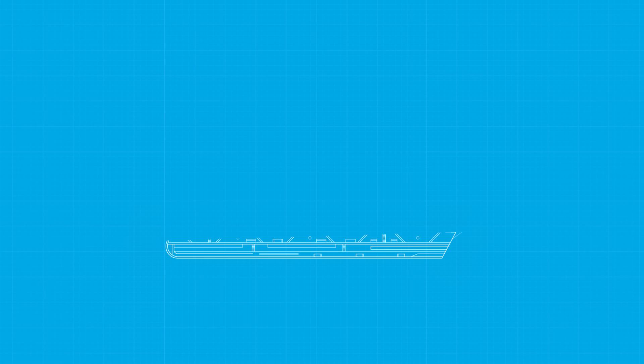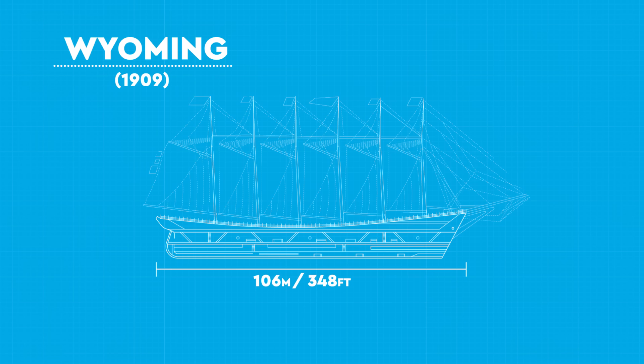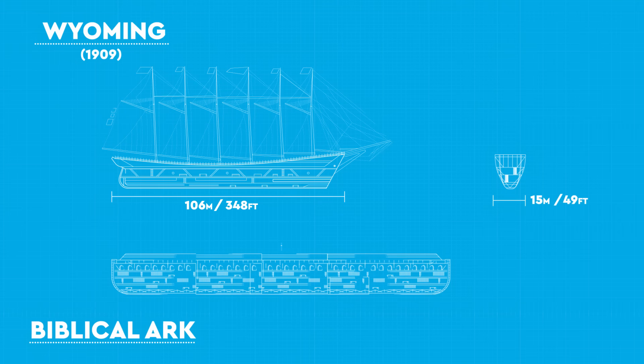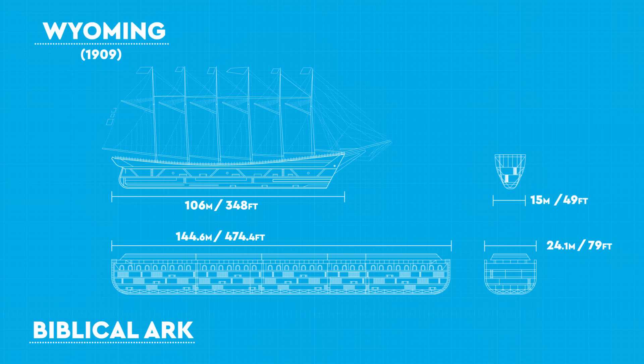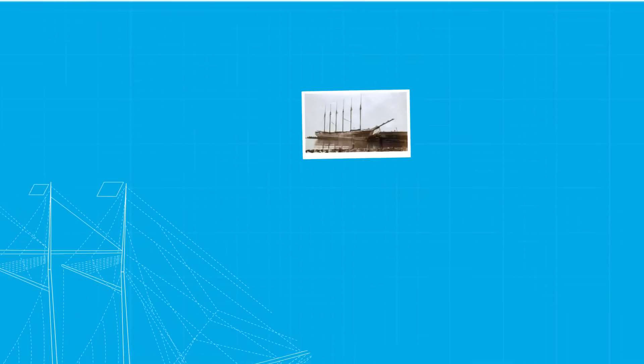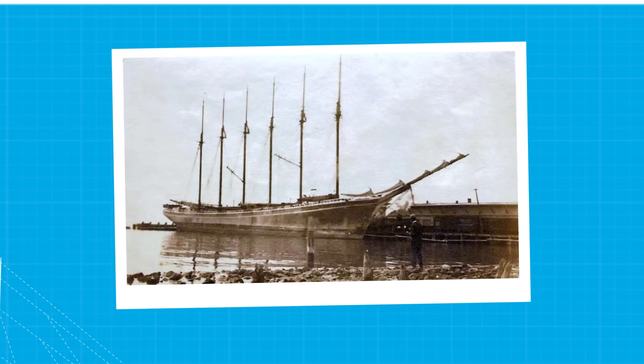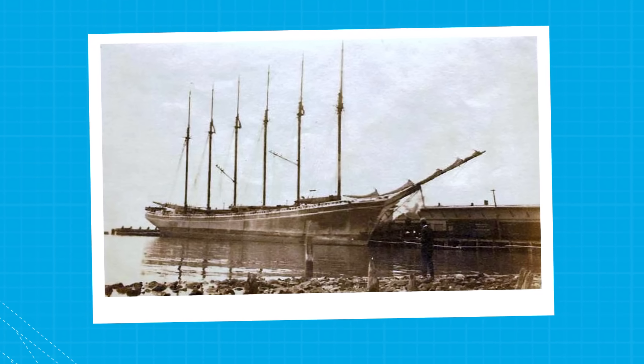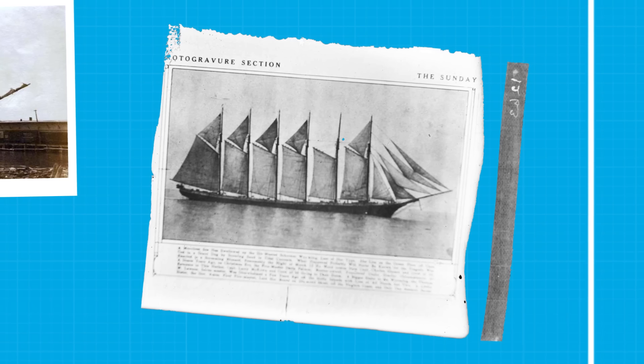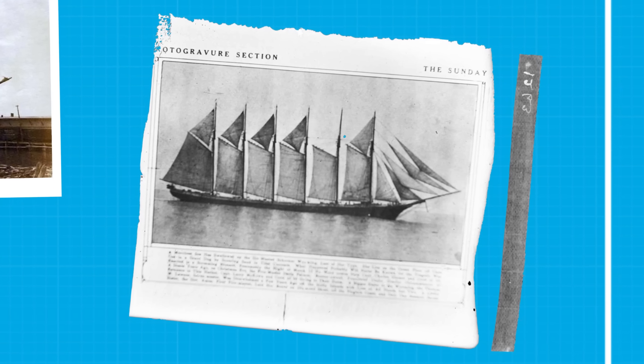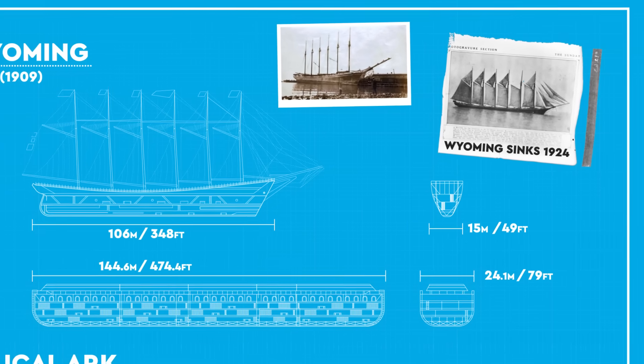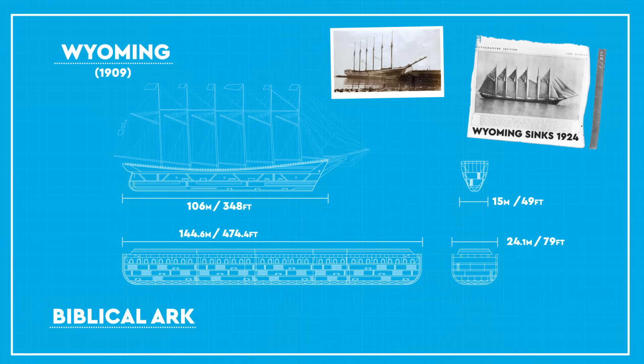The reasoning behind this is why the largest wooden ship ever constructed, the Wyoming in 1909, was only two-thirds the size of Noah's Ark. And even at this size, the Wyoming flexed and twisted opening up seams in its hull, causing leaks that required pumps to keep the hull only relatively free of water. Despite these measures, it still eventually filled with water and sank in 1924. Subsequent wooden ships were reinforced with steel to ensure their seaworthiness.